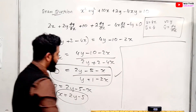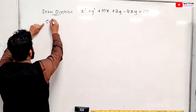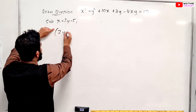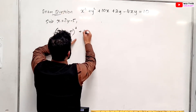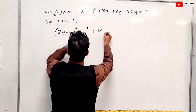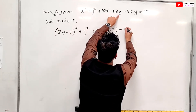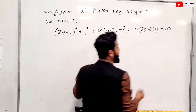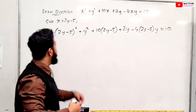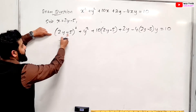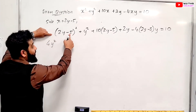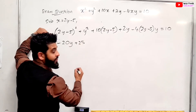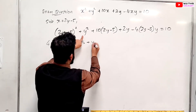We substitute x = 2y - 5 into our original equation. We get (2y - 5)² plus y² plus 10(2y - 5) plus 2y minus 4(2y - 5)·y equals 10. Now let's expand the brackets.